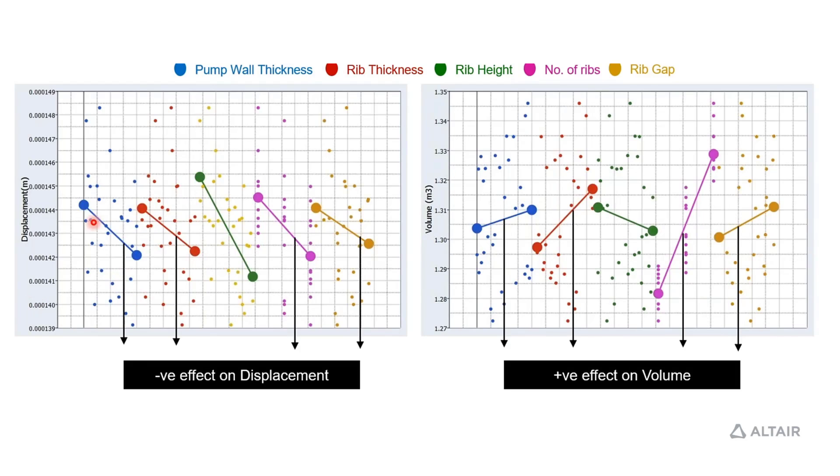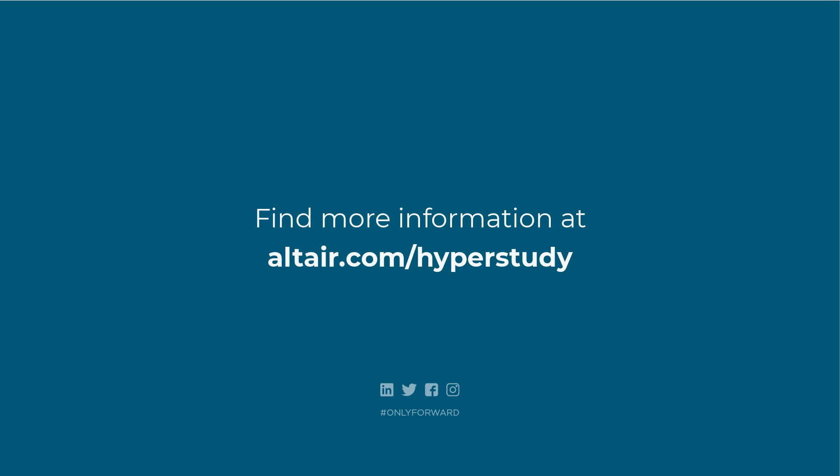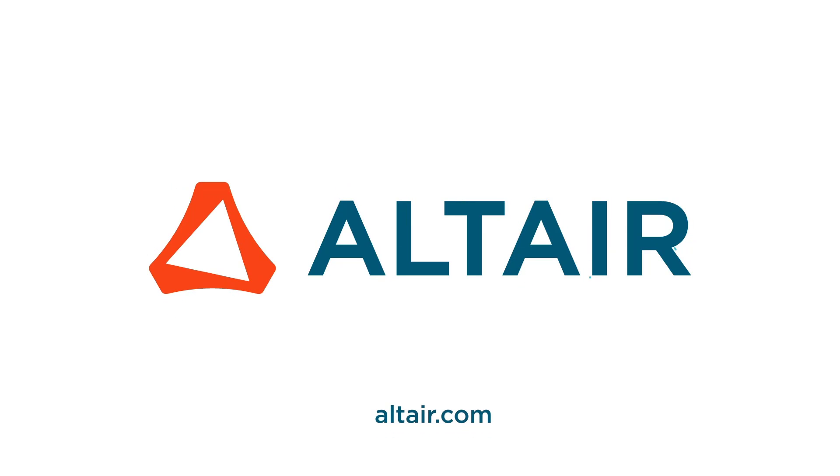In terms of these linear effects, for displacement all are having a negative effect. Each of these variables are having a negative effect, whereas for volume they're having a mix of both positive and negative. Pump wall thickness and rib height are having a negative effect on displacement whereas a positive effect on volume. This is the information you get by integrating Hyperstudy with Simlab for doing your DOE studies, then creating a mathematical model, and finally optimizing it.